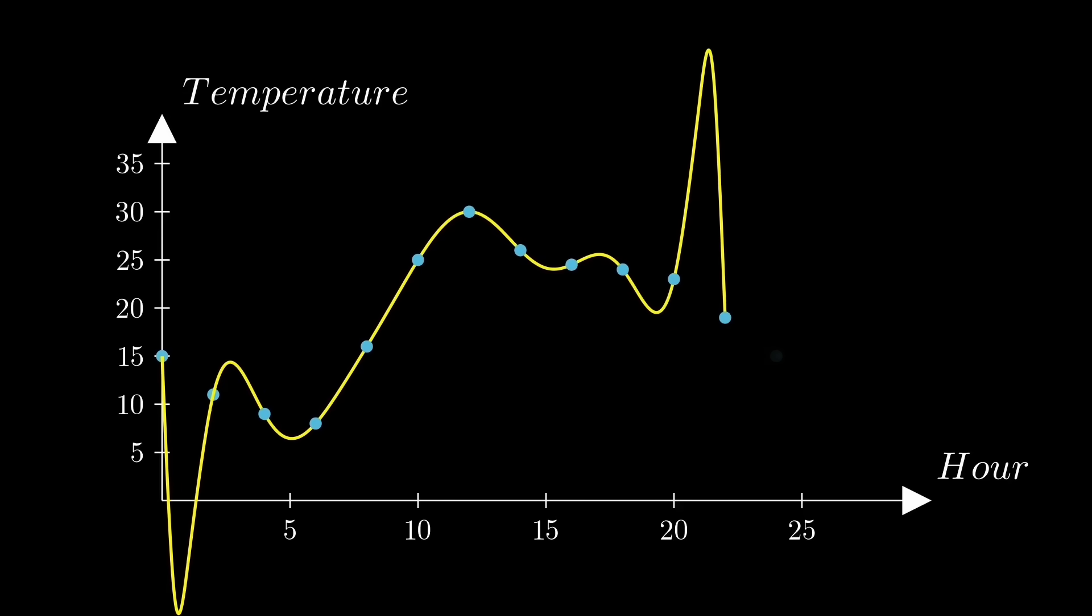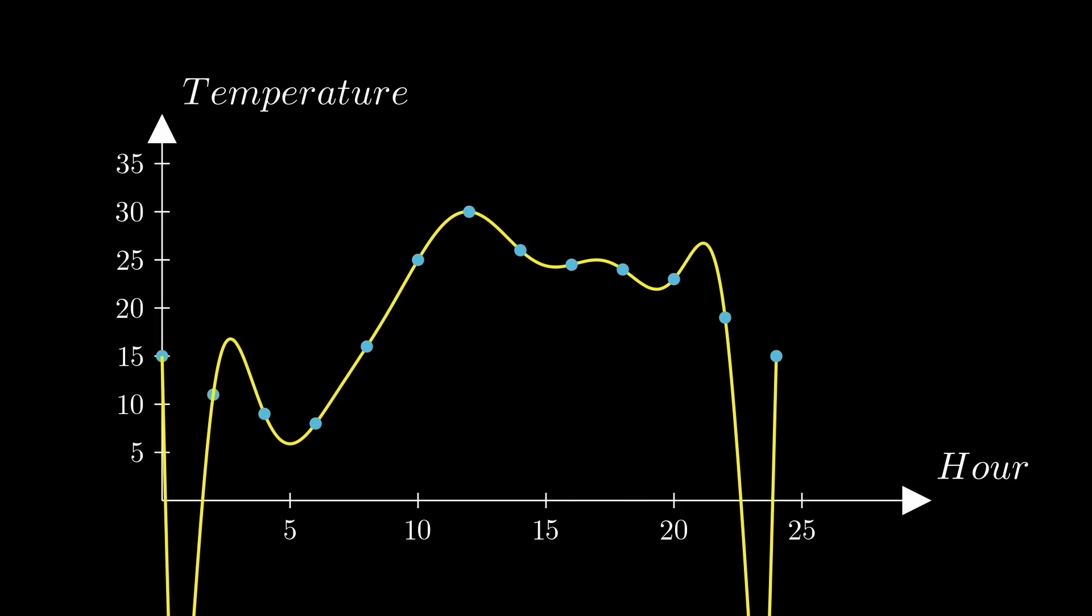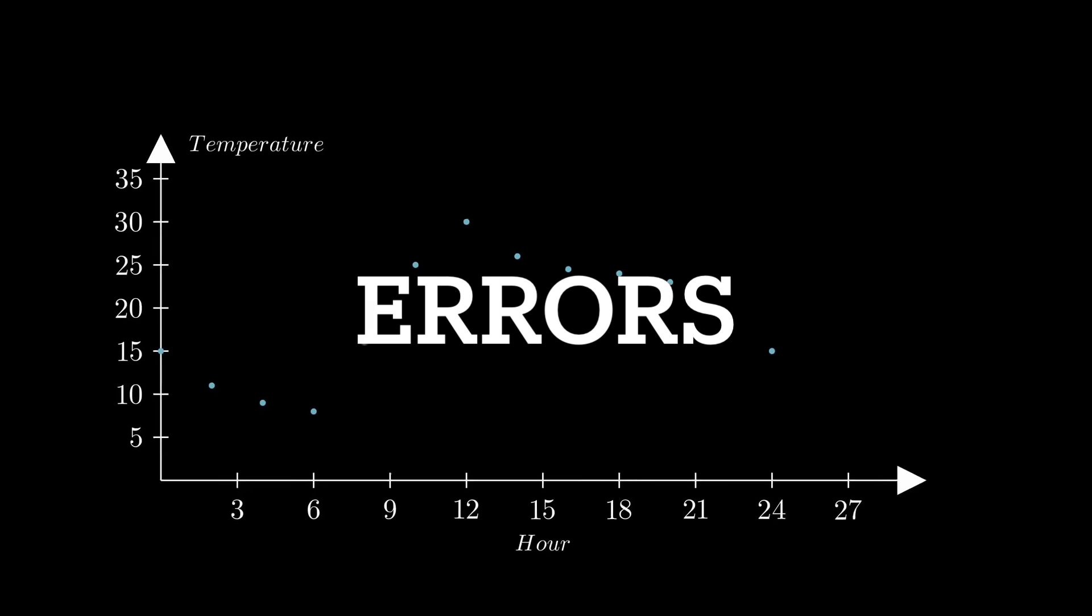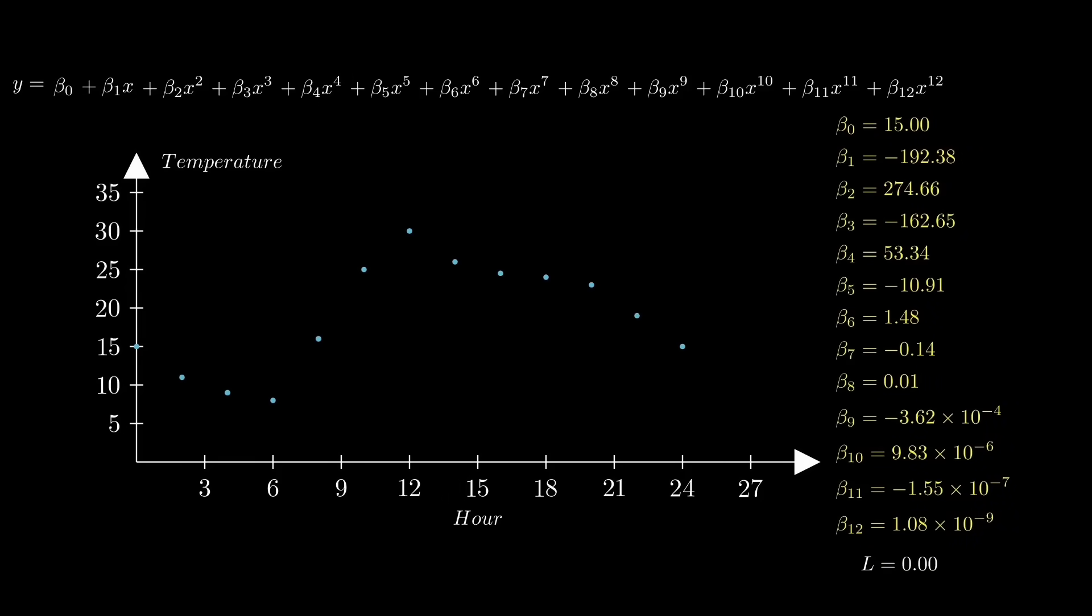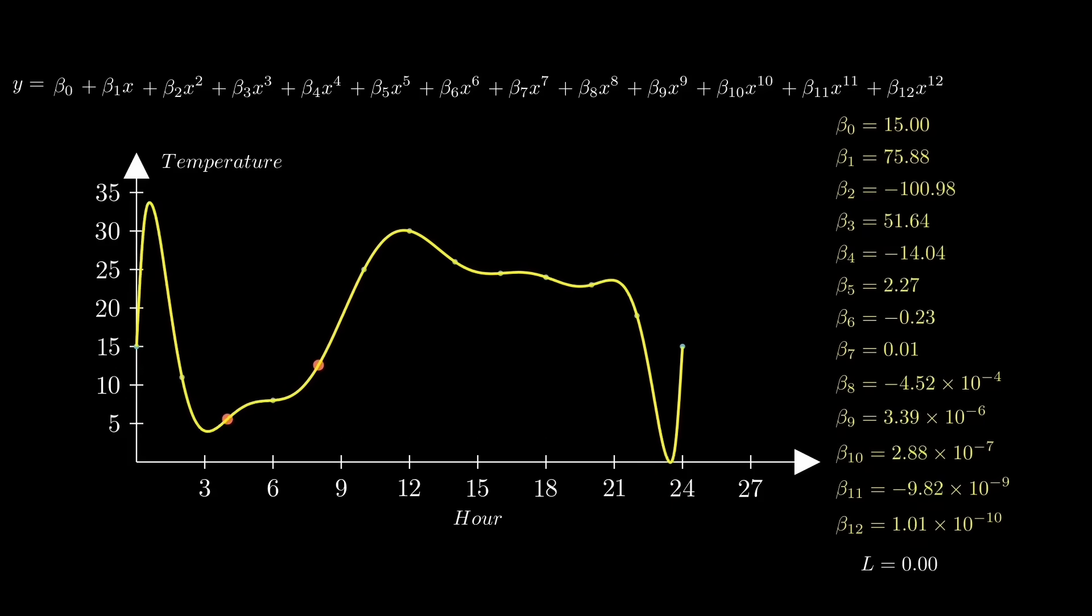But you may ask, why shouldn't the correct model pass through all the points perfectly? The answer lies in errors. Our measured data points are not exact, and if we fit a curve perfectly through all the points, it captures all the noise in our data.